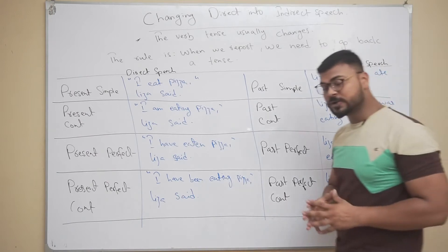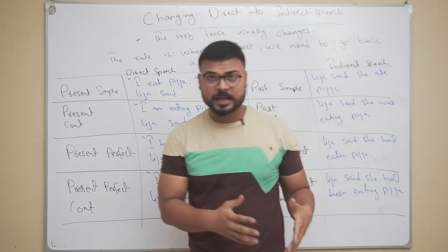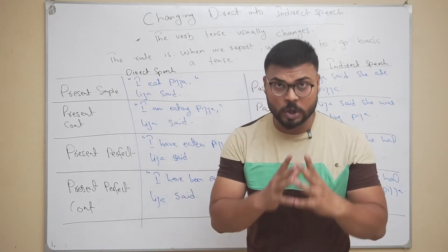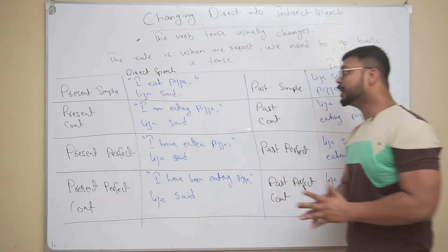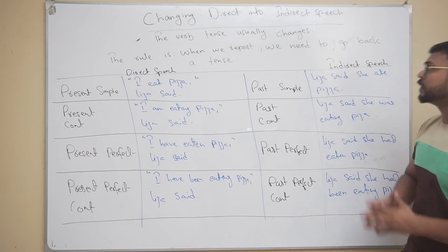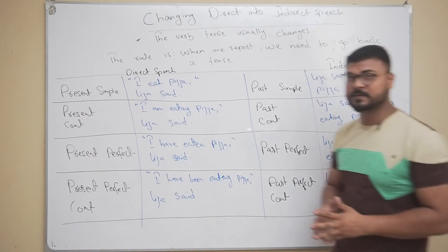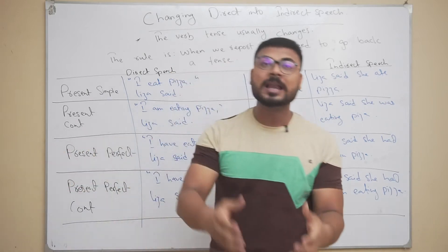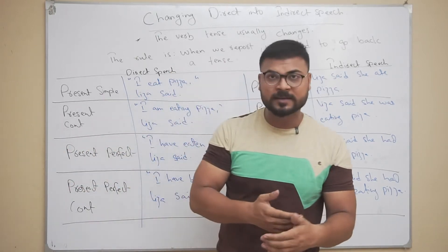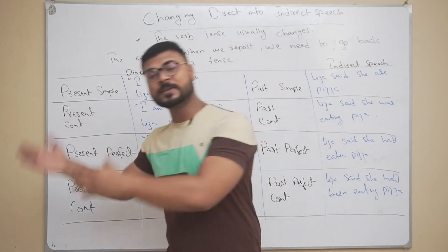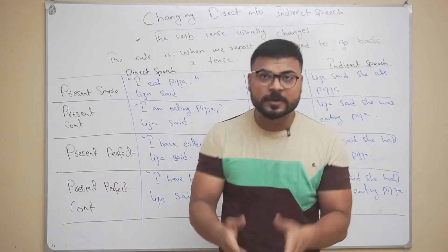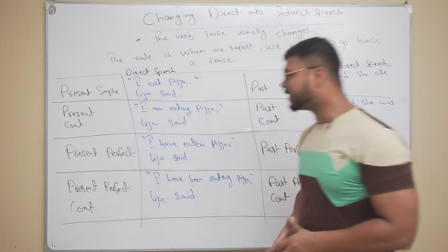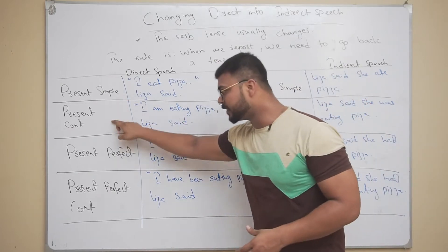Whenever you change direct into indirect speech, the word tense usually changes — not always. The rule is: when we report, we need to go back a tense. Suppose if I'm talking to you and telling you someone's words, I'll have to go back in tense. So if the person said something in present simple, I'll report it in past simple.